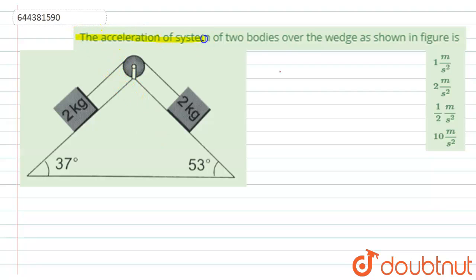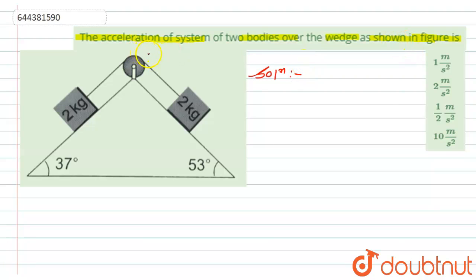The acceleration of a system of two bodies over the wedge as shown in the figure. Let's see the solution. In this question we have been given an arrangement of wedges, and we have to find the acceleration for the system. So let's see the solution. First of all, let us draw the free body diagram.